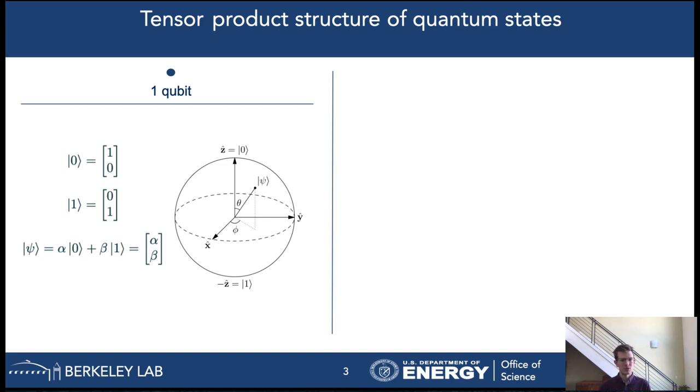The Bloch sphere picture, which is also shown on the slide, is commonly used to represent the state of a single qubit system. On the Bloch sphere, the orthogonal ket0 and ket1 states are located at respectively the north and the south pole of the sphere. Any single qubit state ket psi corresponds to a point on the Bloch sphere, and it is parameterized by two angles theta and phi. We can say that the state of a single qubit lives in a two-dimensional normalized complex vector space, or a two-dimensional Hilbert space.